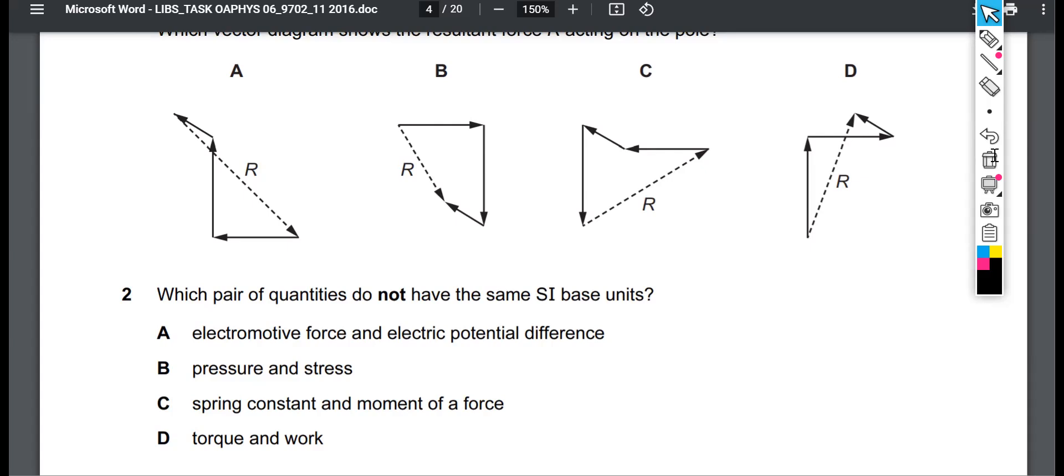Spring constant and moment of force is the correct answer. They do not have the same SI base units. Again, as soon as you can show different units. Now, sometimes units can look different, like meters per second squared are the same thing as a newton per kilogram. You may recall these are two different ways of measuring G. They don't look the same right now, but if you broke newtons down into the base units, you'd realize, oh yeah, kilograms cancels and they are the same. But here we can show like a spring constant is newtons of force per meter of extension. And the moment of force, remember, is how many newtons of force are acting a certain distance away from a pivot. So we can compare these two and realize there's no way we can make these equal. A newton per meter is never going to be a newton meter. And so this is the correct answer. They do not have the same base units.